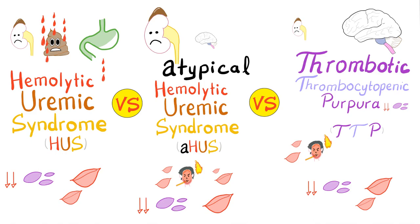Look at the hemolytic uremic syndrome first. You have a triad of microangiopathic hemolytic anemia, thrombocytopenia, and acute renal failure. Plus, there is E. coli O157:H7, which will lead to bloody diarrhea, blood in the stool.